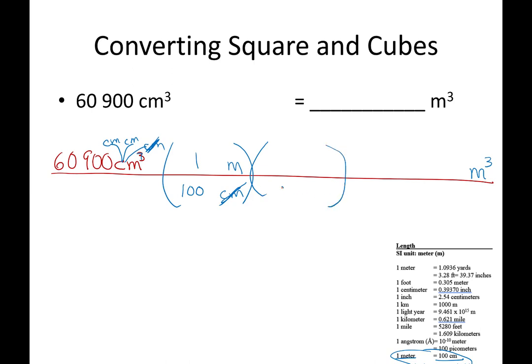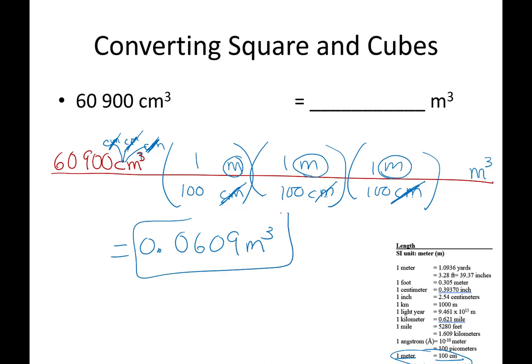The nice thing about this process is once you get it, you get into a rhythm, you just do it more than once. One meter, 100 centimeters. And each one of these cancels one, two, three. And I end up with meters times meters times meters, which equals cubic meters. When I pick up my calculator, I end up with 0.0609 meters cubed. And the three digits here indicate the three significant digits there. And we are good.